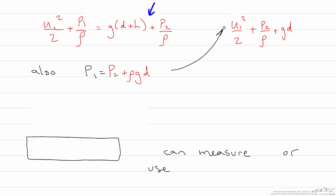Now, taking this side of the equation and setting it equal to this side of the equation, I see that I get a gd on each side, u1 squared over 2 plus gd.